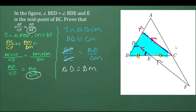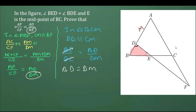Now look at this triangle. We have two angles equal — angle BED equals angle BDE — so their opposite sides are equal. Therefore BD is equal to BE. From these two results, we can replace DM with BE.